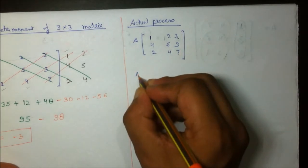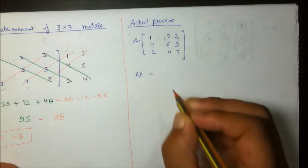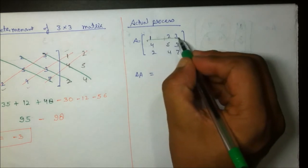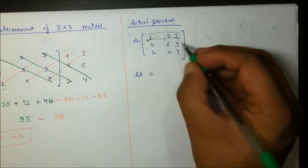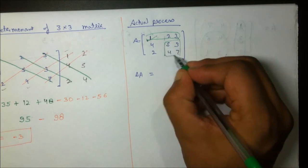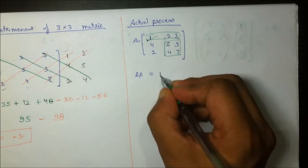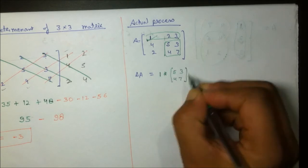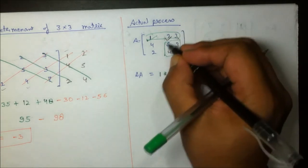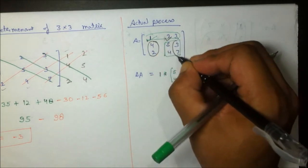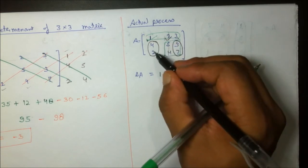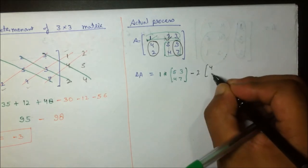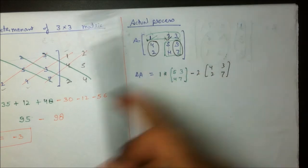To find det(A), I consider the first row [1, 2, 3]. Taking the first element 1 and its corresponding 2×2 block [5, 3; 4, 7], I get 1×[5, 3; 4, 7]. For the second element 2, leaving out its column, I get minus 2×[4, 3; 2, 7].